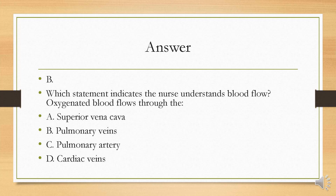The answer is B. The pulmonary veins carry oxygenated blood. This is important to remember as the pulmonary veins are the only veins in the human body that carry oxygenated blood. You're trained through your A and P classes that veins carry deoxygenated blood and arteries carry oxygenated blood — this is the one big outlier to that rule. The superior vena cava carries venous blood, the pulmonary arteries carry unoxygenated blood to the lungs, and the cardiac veins carry unoxygenated blood.